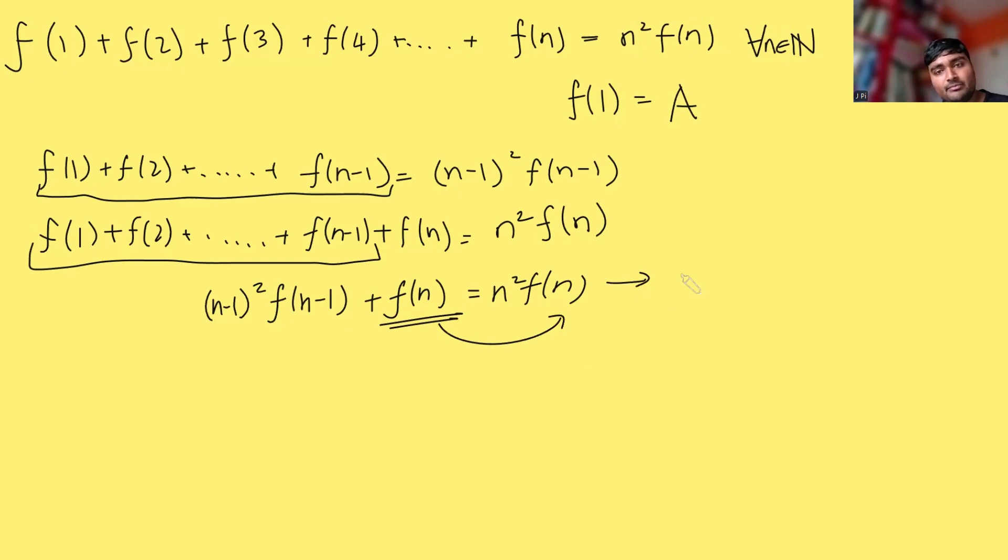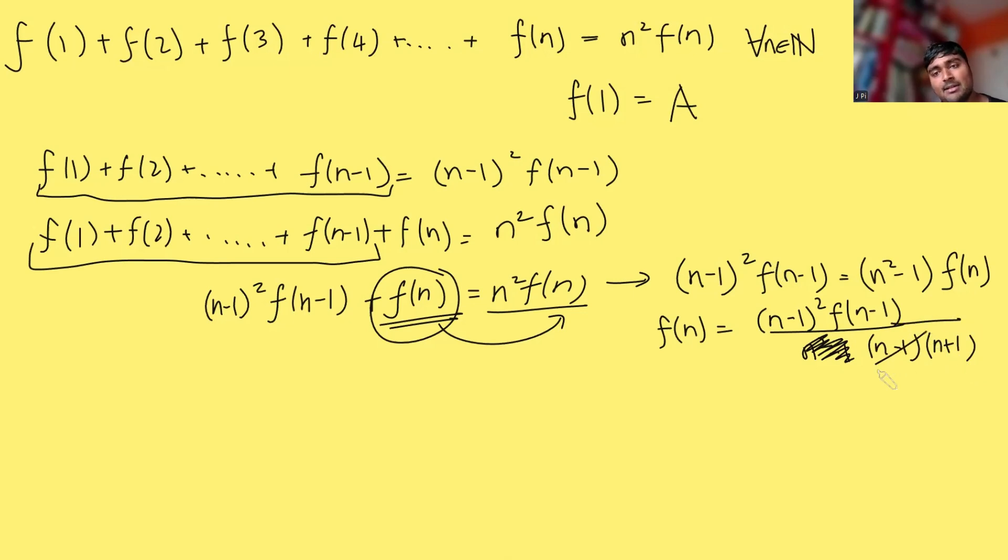Okay let's do that let's make f(n) the subject of this so let's bring this f(n) onto this side so we get (n-1) squared f(n-1) equals I've got n squared lots of f(n) and I'm subtracting f(n) that's (n squared - 1) lots of f(n) and let's just divide both sides by n squared minus 1. So f(n) equals (n-1) squared f(n-1) all over n squared minus 1 and we might be able to simplify this because n squared minus 1 remember is the same as (n-1)(n+1) using the difference of two squares and then this n-1 on the bottom cancels with one of the ones on the top.